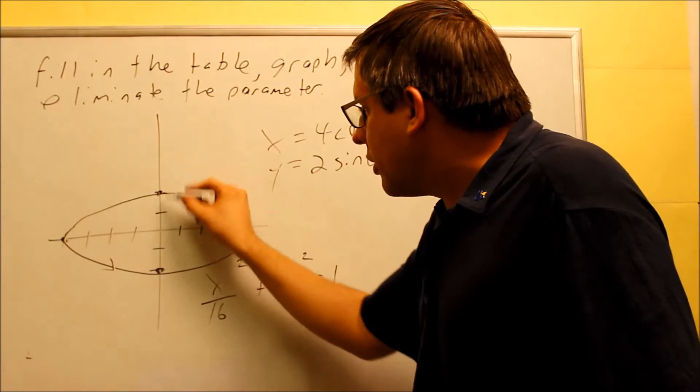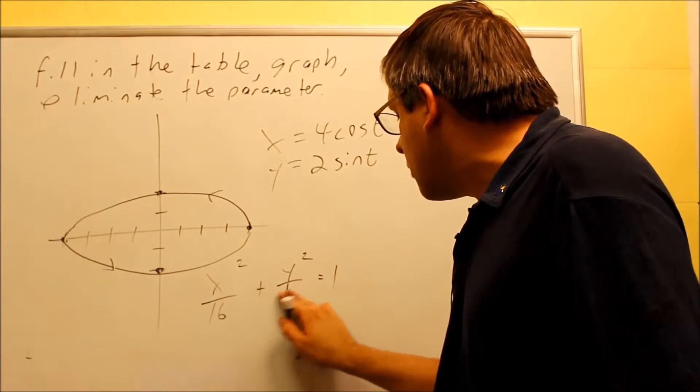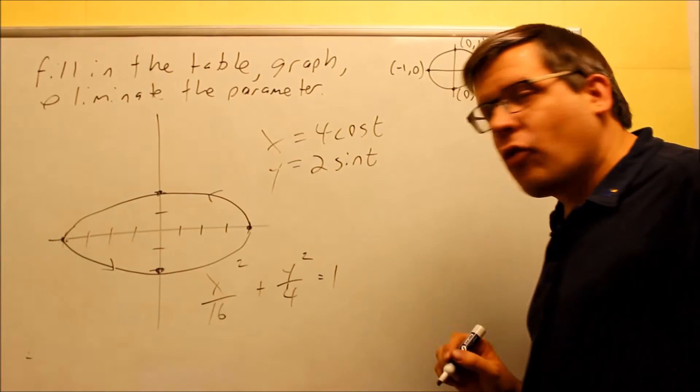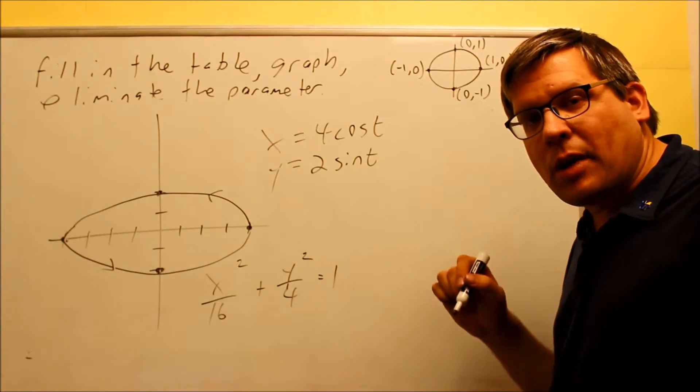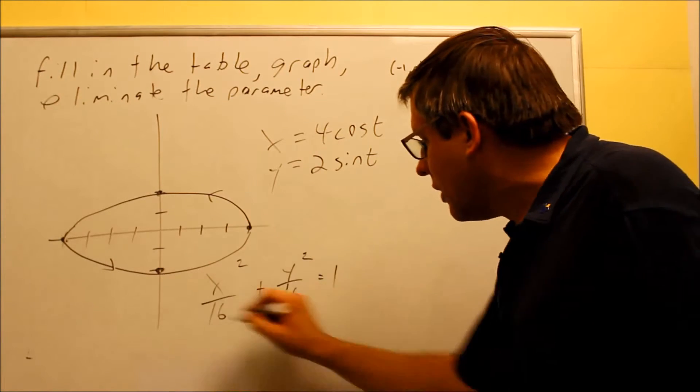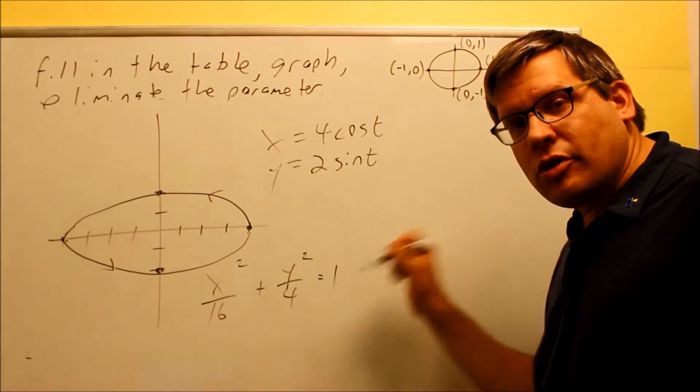Then this squared here, that's 2 in the other direction. Your b is 2, so 2 squared is going to give you 4. So right here, there it is. That's the equation. That's what the parameter eliminated. There's no more t's in here. That would actually be the answer that you would put here.